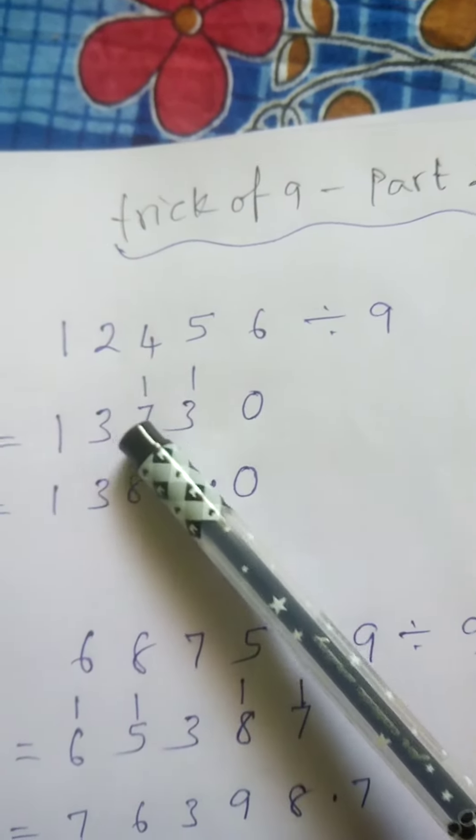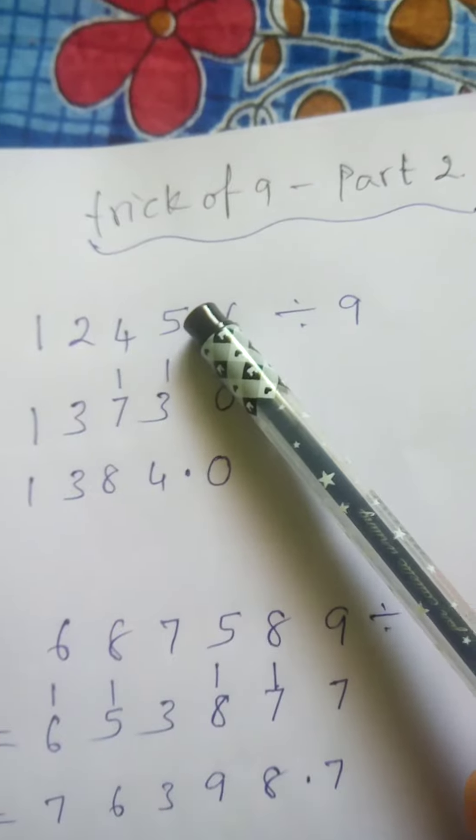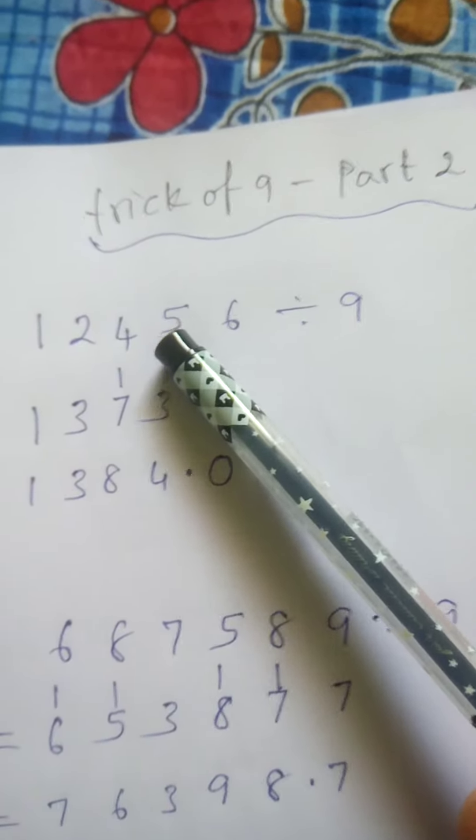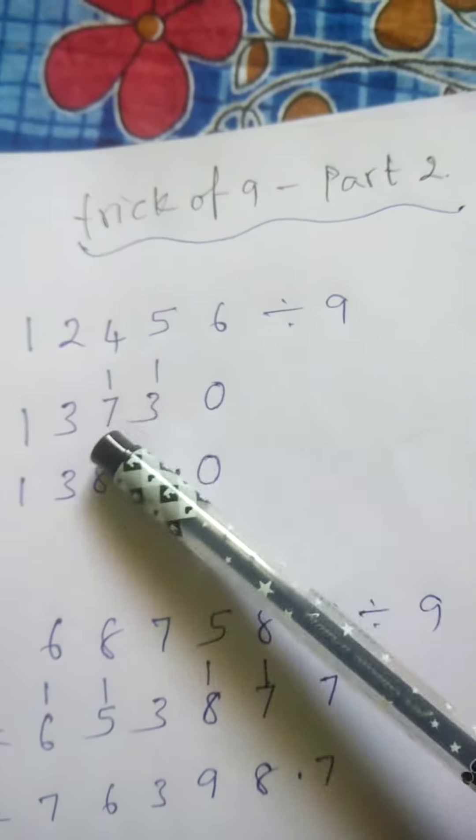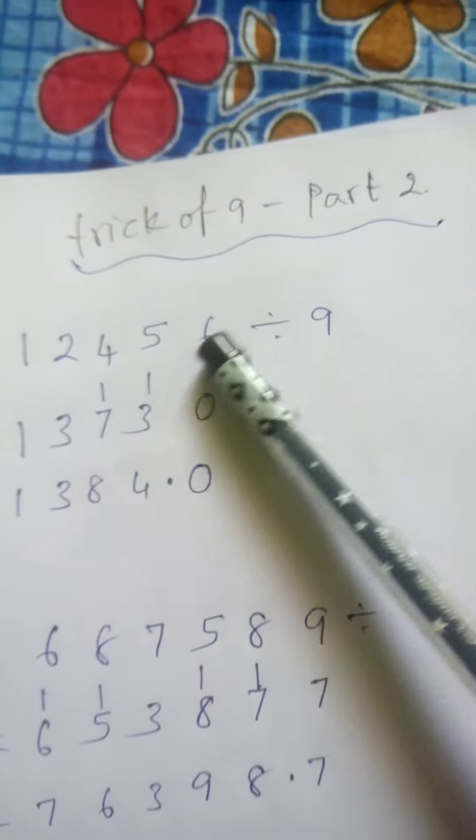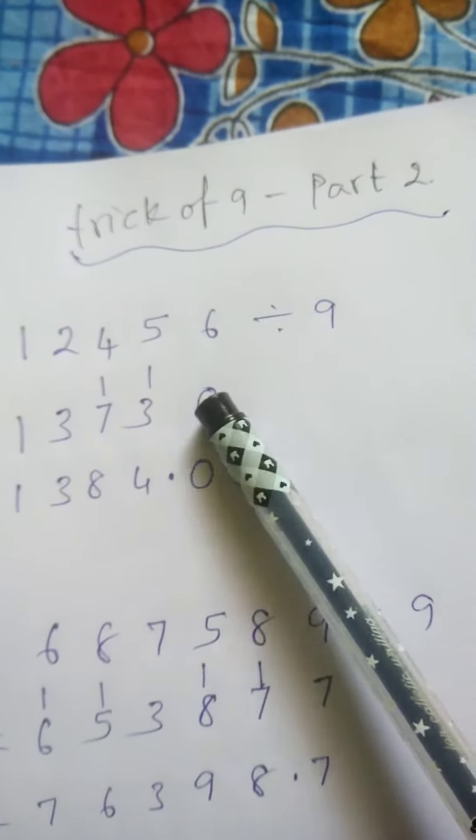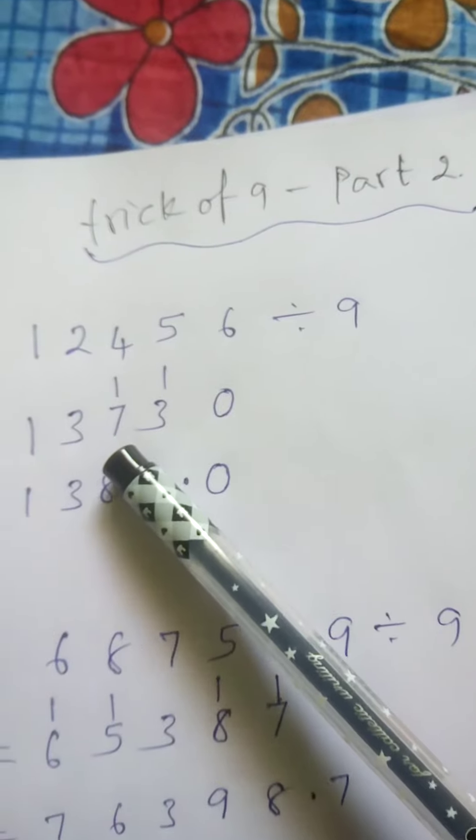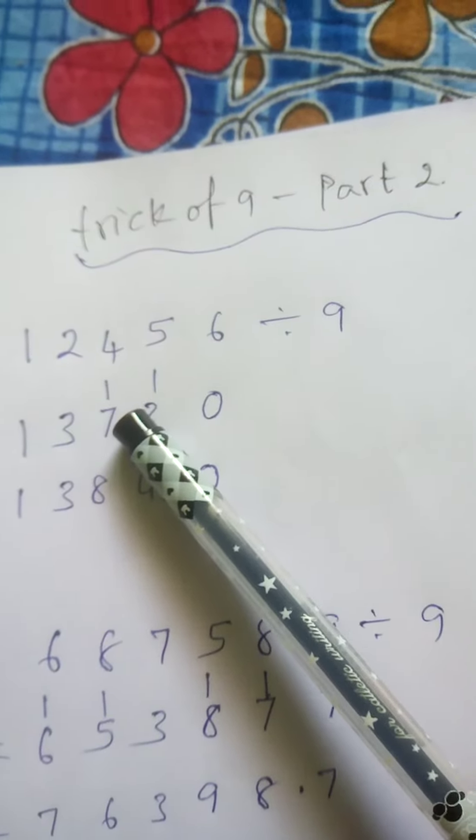3 plus 4 is 7. 7 plus 5 is 12. Whenever you get a number equal to or more than 9, you should subtract 9 and carry 1.